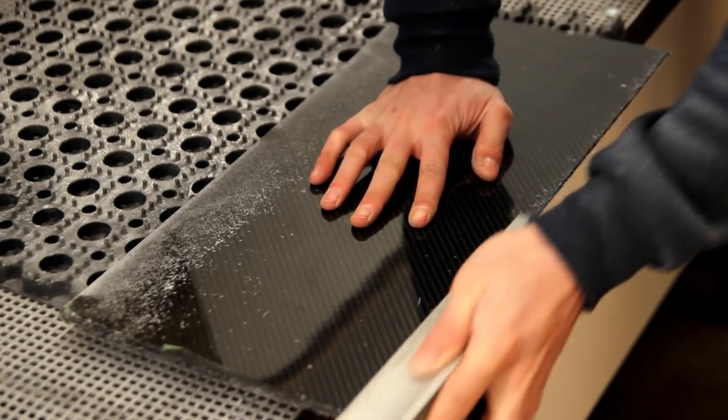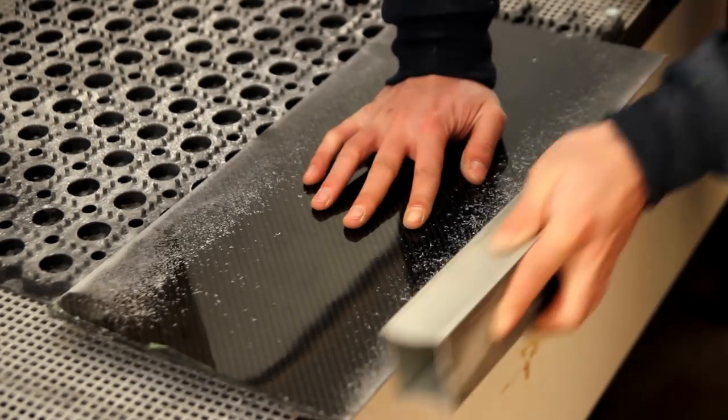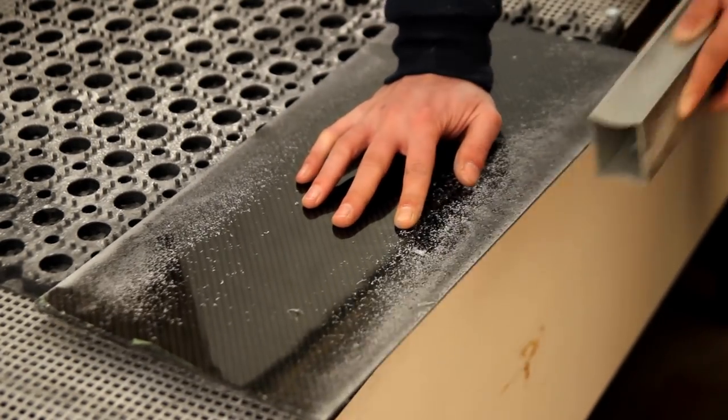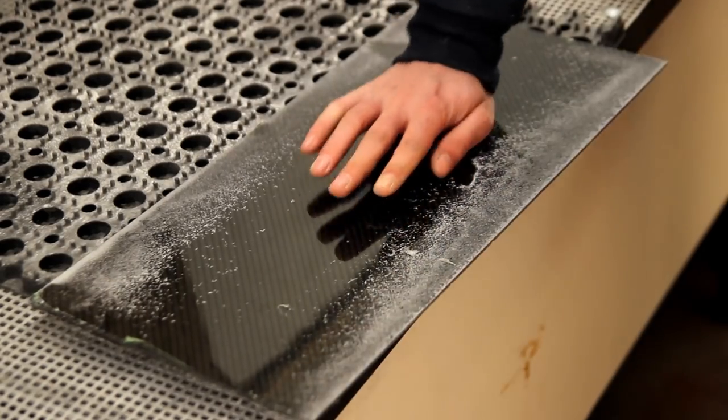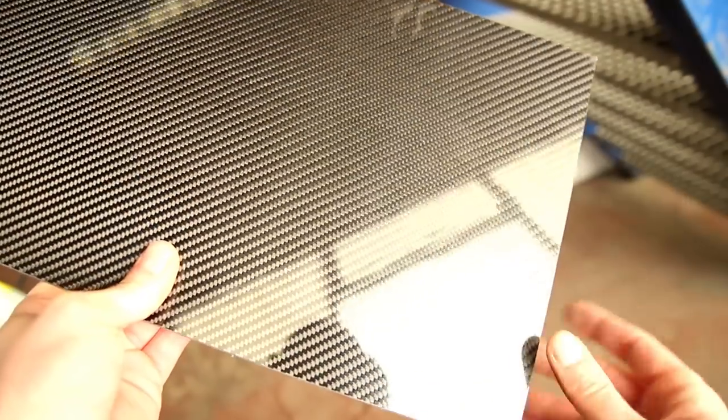So the green film is removed. First time I've used it and I'm pretty happy with it, just to save the parts from scratches and so on. And then I'm just using the Permagrit block just to sand off all the excess resin and just a little bit of carbon that was sticking out.